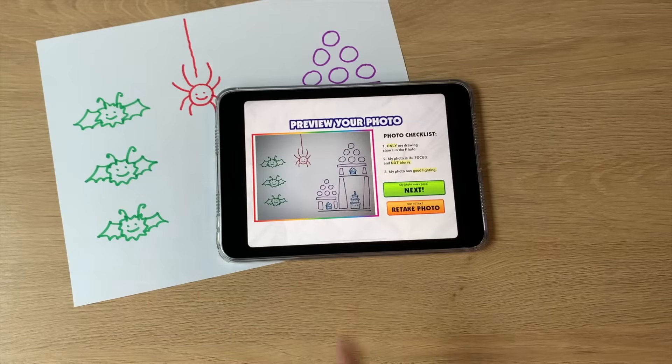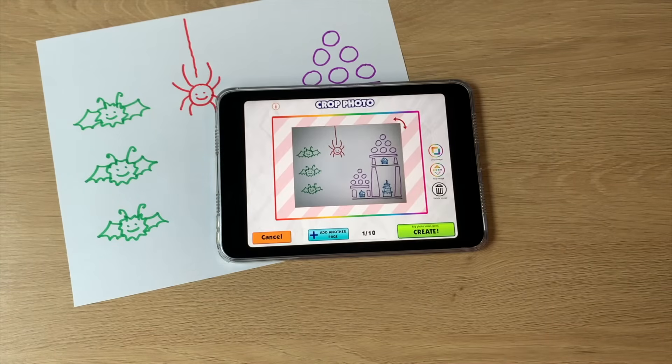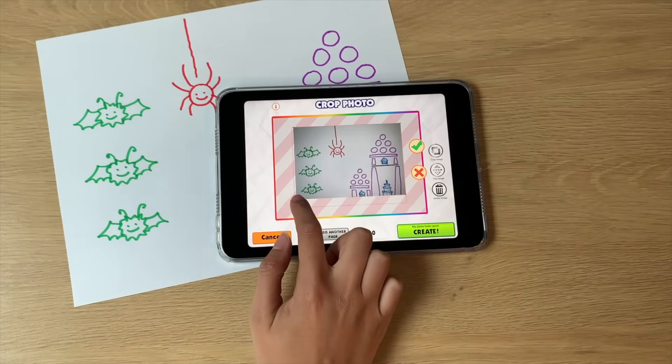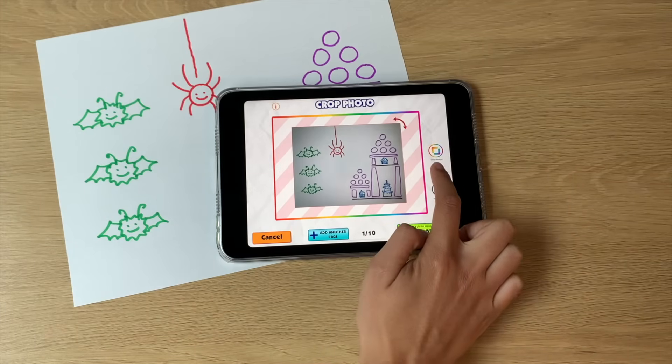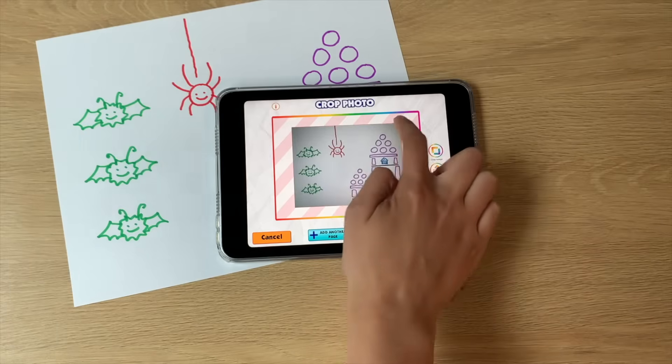If your picture looks good in the preview, click Next. Now you are in the photo editor. Here you can crop, flip, and rotate your photo.